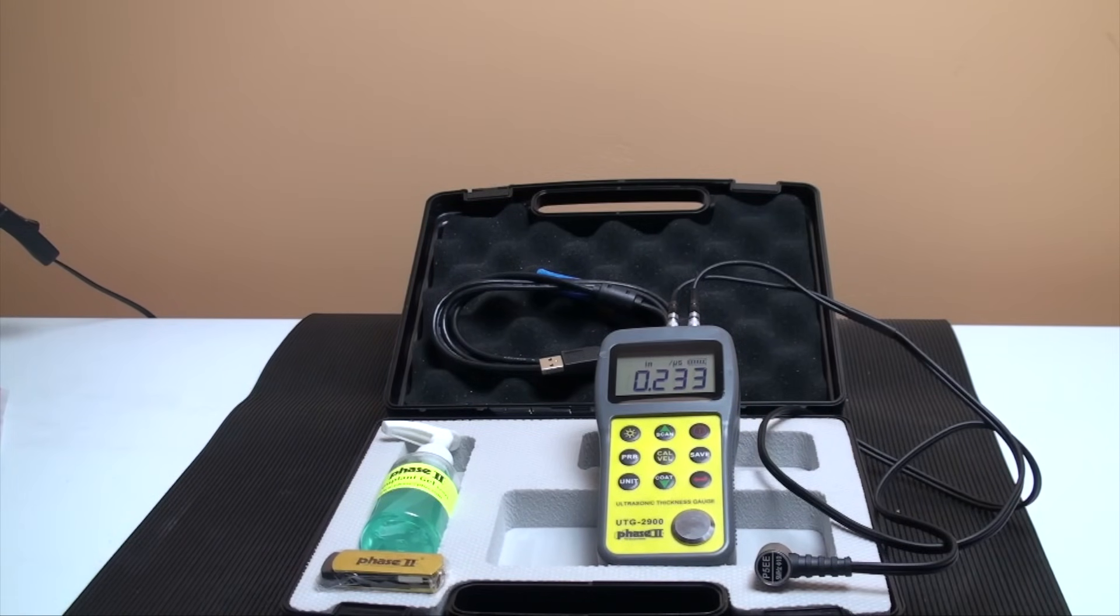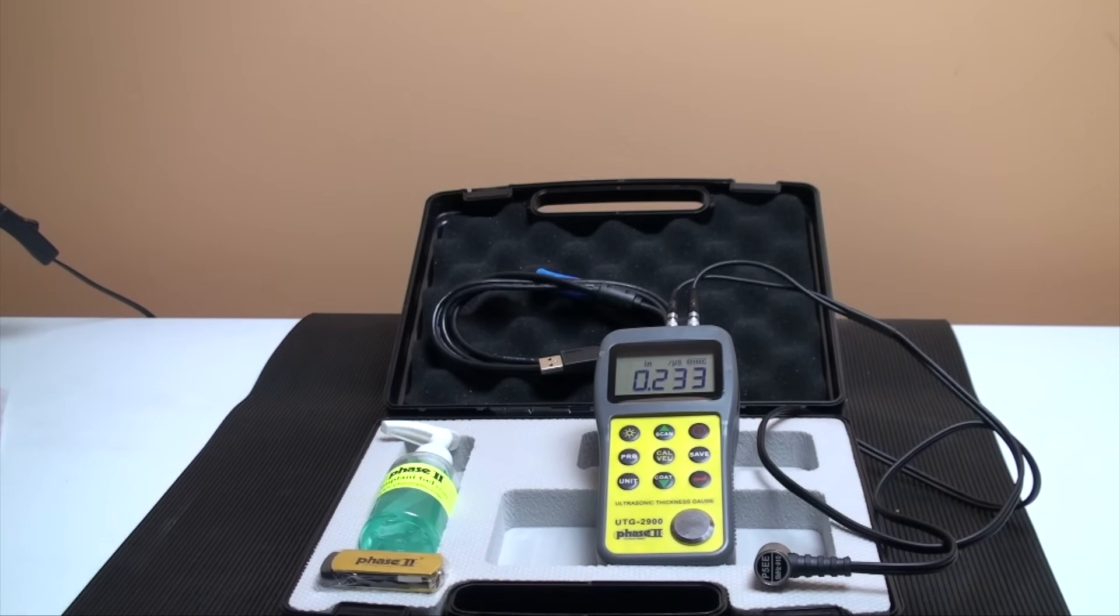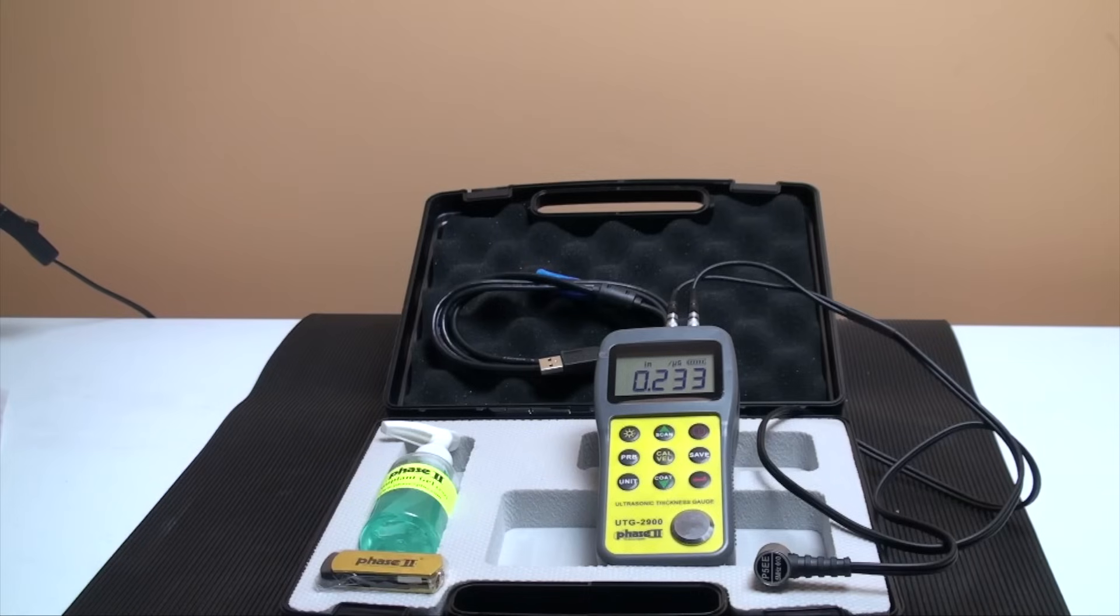You always have the option to manually preset the velocity of any material. Each gauge is supplied with a 5MHz dual sensor probe, a bottle of couplant gel, NIST certificate, batteries, and a USB stick with operation manual and software.